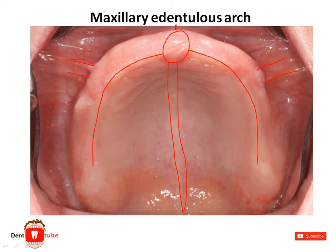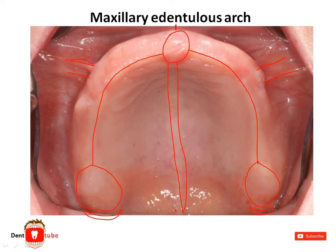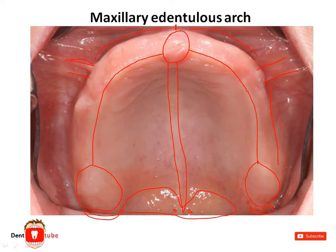The crest of the alveolar ridge is present on both sides. This is the maxillary tuberosity. And this is the hamular notch. We can see the openings here — these are the fovea palatinae. And this is the posterior palatal seal area. So this becomes the labial vestibule and this becomes the buccal vestibule.